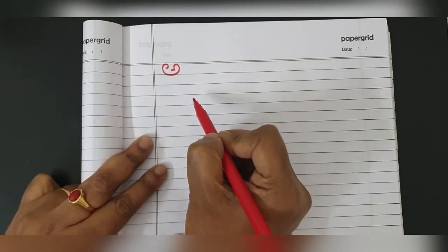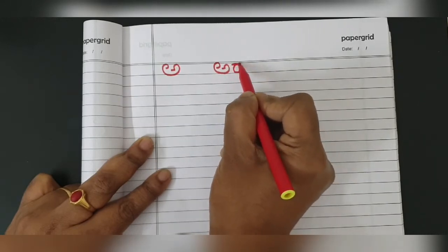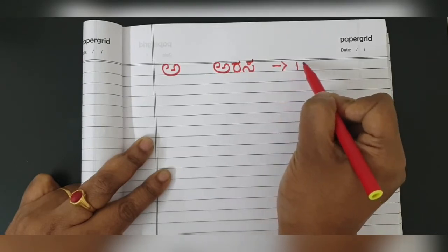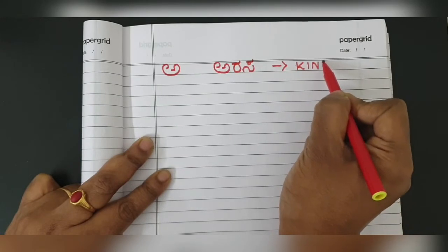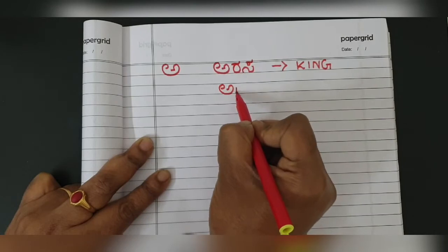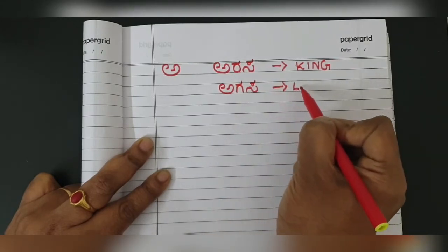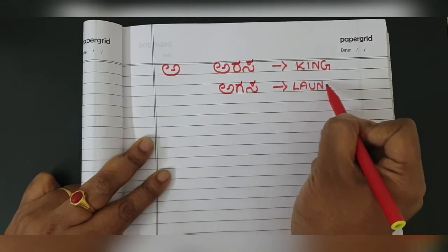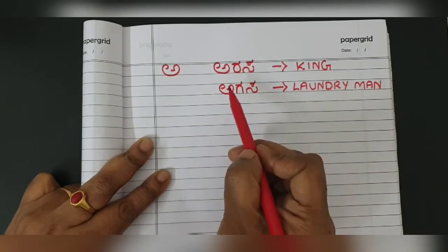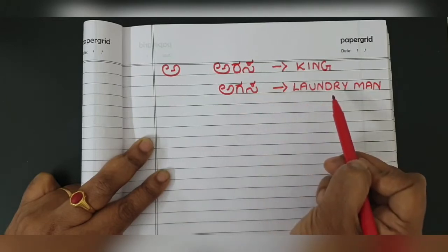The first word from A is 'arasa' — A-R-A-S-A. Arasa means king. The second word from A is 'agasa' — A-G-A-S-A. Agasa means laundryman. There's just a difference of 'ga' here: arasa means king, agasa means laundryman.